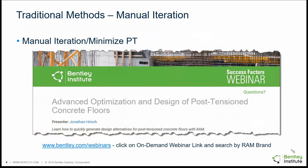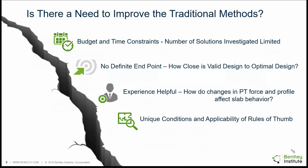The third approach is to start with a minimum amount of PT and then do manual iterations to increase that PT quantity until all code requirements are met. There's a good demonstration of this in a Success Factor webinar given earlier in the year, with a link provided on the slide. That webinar also has more details on the optimization feature we're discussing today, so it might be well worth your effort.